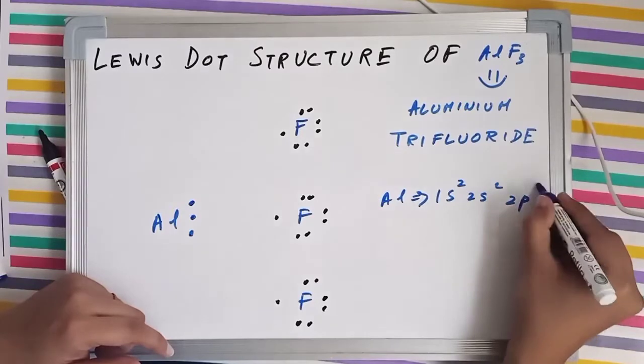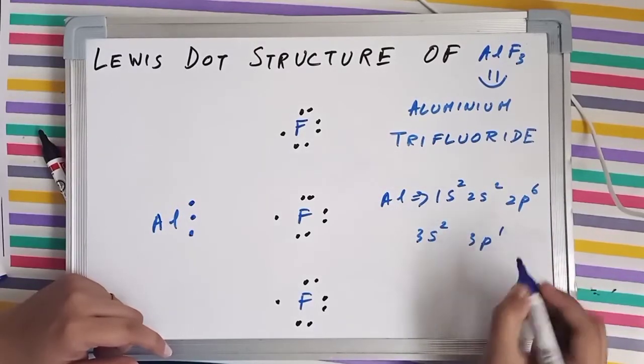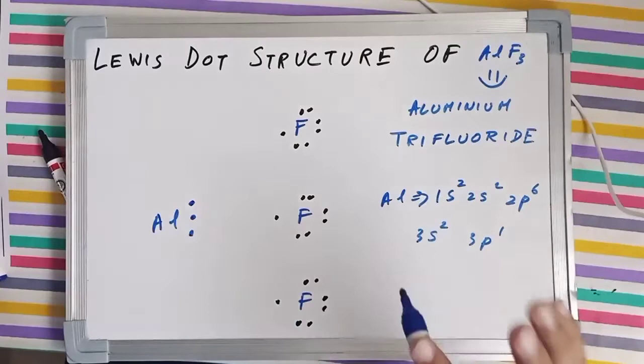Aluminum says how? See, F1 says, your electronic configuration was 1s2, 2s2, 2p6, 3s2 and 3p1. You are going to give me your 3 electrons from the valence shell.